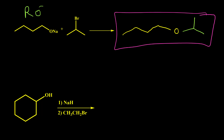So if we want to synthesize this ether, we cannot use that secondary alkyl halide. Instead, we can switch the reactants: use a primary alkyl halide on one side and the corresponding alkoxide on the other. With a primary alkyl halide, the oxygen can easily kick bromine out of the structure.